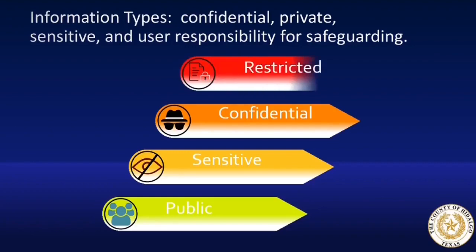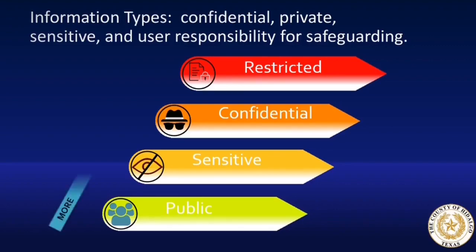Restricted or regulated information is never shared or copied unless authorized to do so — this is the most important information to be guarded. Examples would be social security numbers, credit card information, passcodes, or personal health information. This information is controlled by regulations such as HIPAA, CEGIS, or PCI compliance rules. Depending on the types of information, access may be more or less restricted, as well as the controls applied to the information.